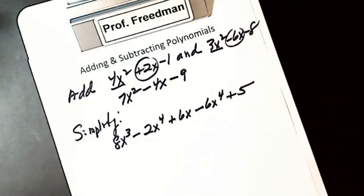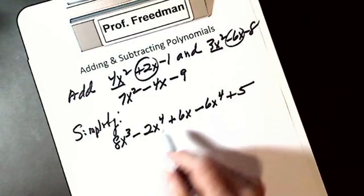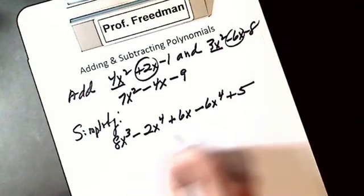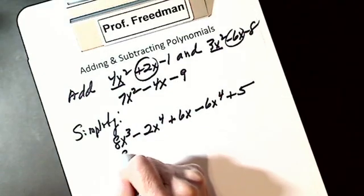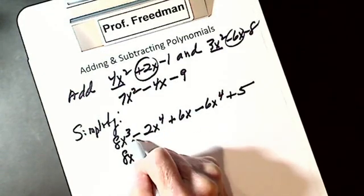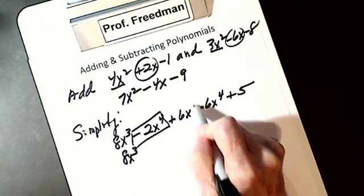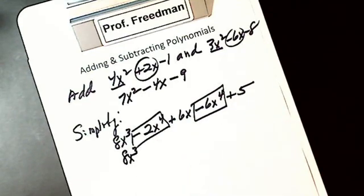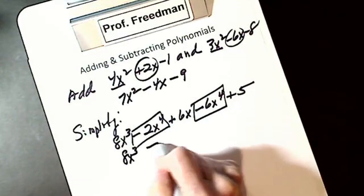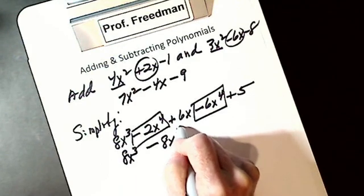So now, I combine what I can, if I can't, I can't. I usually start, I have 8x cubed, I have no other cubes, so I can't combine it. I have minus 2x to the 4th and I have a minus 6x to the 4th. So I can combine them and got minus 8x to the 4th.